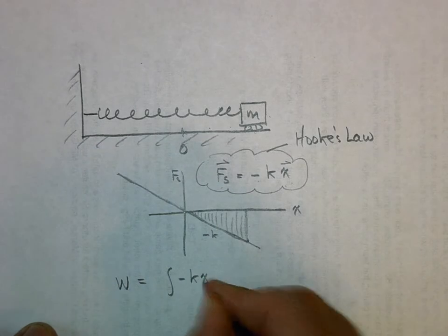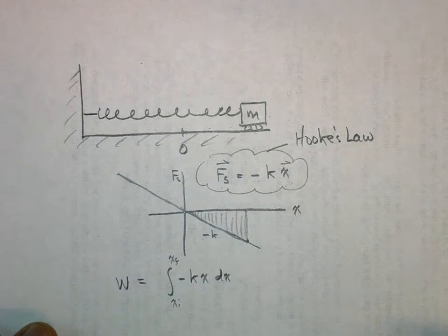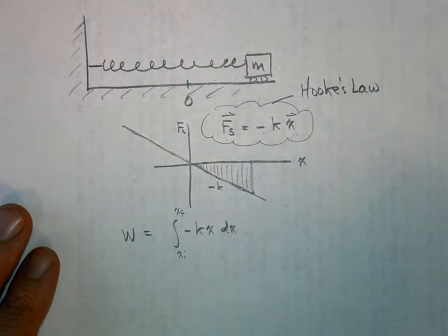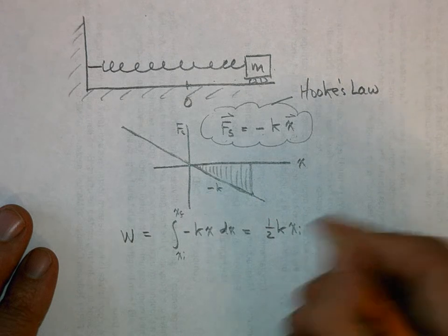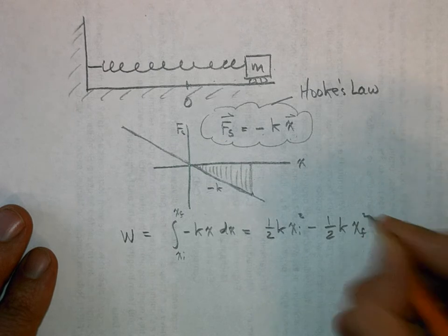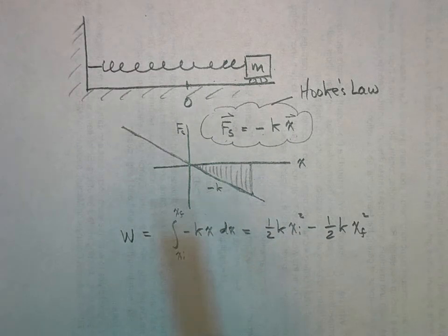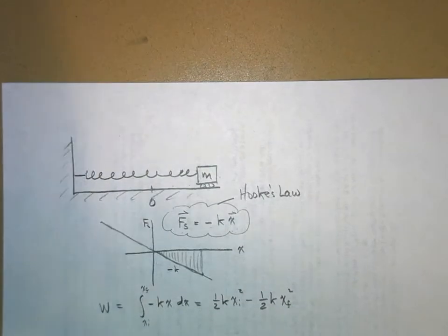And so, we have negative kx dx from x initial to x final. And, I'll spare you the algebra here. You can go through all of this, but what you get is you get one half kx initial squared minus one half kx final squared. I'll tell you what. Pause the video right now and go through the math and you'll see that this is true. Okay. And so, pause it right now and do it. Okay. Now, unpause it. Hopefully, you've unpaused it. If you're hearing this, you have unpaused it.